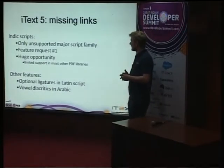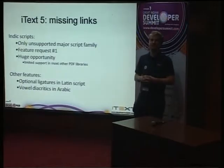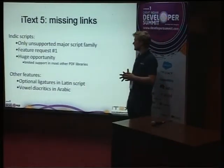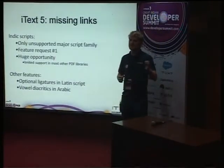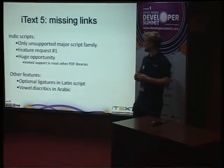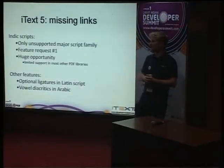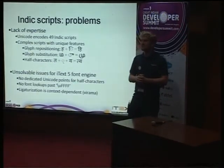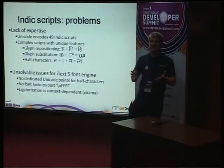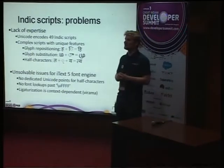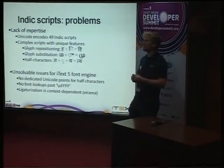There were other problems with iText 5 — for example, optional ligatures in the Latin script, and Arabic vowel diacritics. Normally in Arabic you don't write the vowel diacritics, but for the Quran or other important writing it's necessary to include them, and we didn't support that in iText 5. Our first problem with Indic scripts is that we're a Belgian company — in Western Europe — so we're mostly used to the Latin script. We didn't have a lot of expertise for the Brahmic scripts, like the Indic scripts. One reason is that there are a lot of them — Unicode alone has 49 Indic scripts in the standard, and there are about 100 in total.